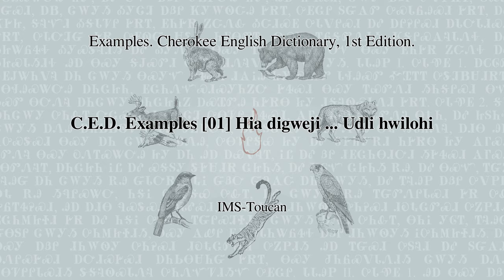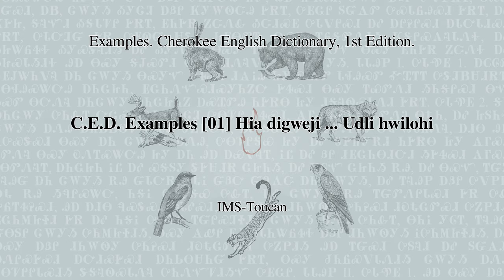Let us begin. Session 1. Here is your first phrase to learn for this session. Listen carefully. Here is the phrase again. You will also hear the following. Here it is in English: These are my children. Here is a new phrase to learn. Listen carefully. Here is the phrase again. Here it is in English: He or she came from outside. Translate into English: These are my children.